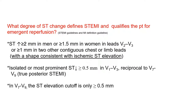I will start with some definitions. We all need to know the cutoffs used in the guidelines in the universal definition of MI for what we call significant ST elevation. They use ST elevation of over 2 mm in men or 1.5 mm in women in leads V2 through V3, where it is universal and normal to have some degree of ST elevation. They use 1 mm in the other leads. For posterior leads V7 and V9, the cutoff is 0.5 mm.